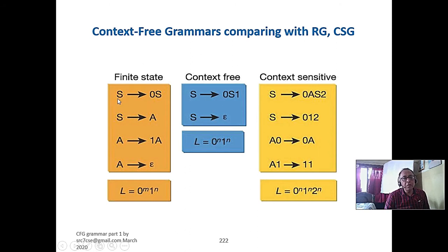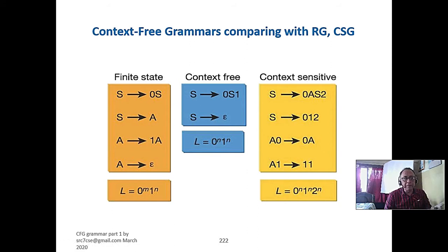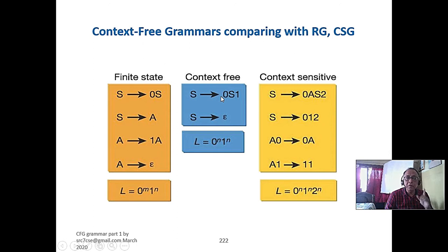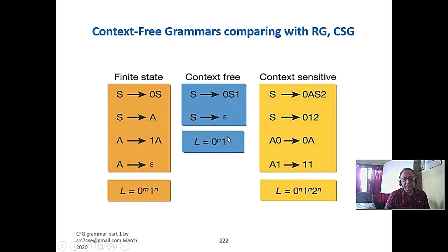Whenever the variable comes in the middle, it is still a context-free grammar. You can call it context-free because regular grammar is a subset of context-free grammar - context-free is the superset. So if someone asks whether it is a context-free grammar, yes it is, but it is also a regular grammar. The pure context-free grammar is one that is not regular - where the variable can come at any point.